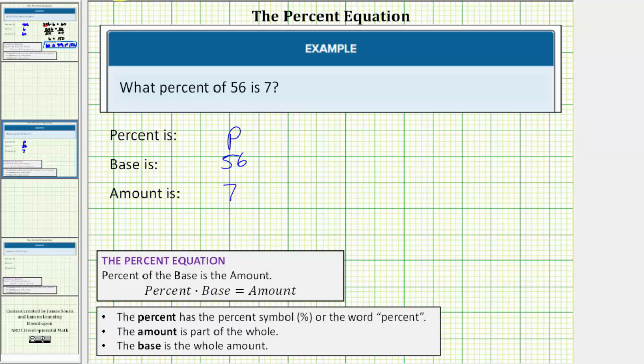And now let's write the percent equation. We have the percent p times the base, which is 56, must equal the amount, which is 7. p times 56 is the same as 56p. So we have 56p equals 7.